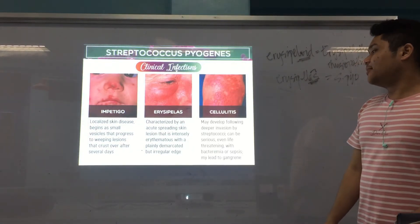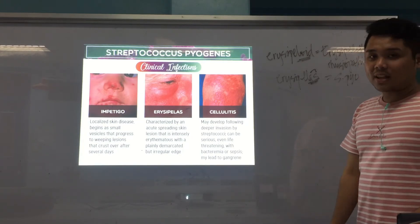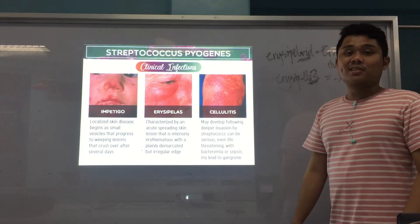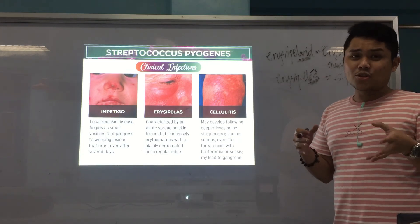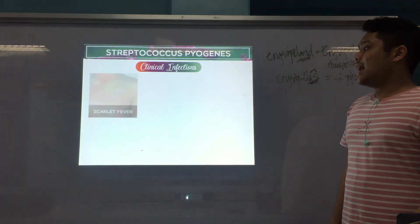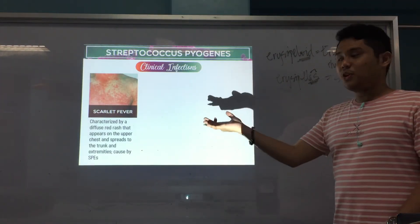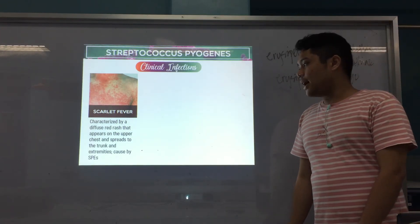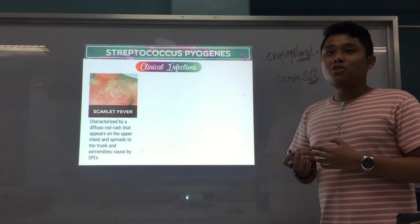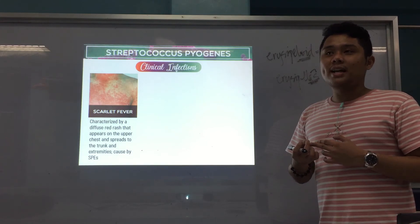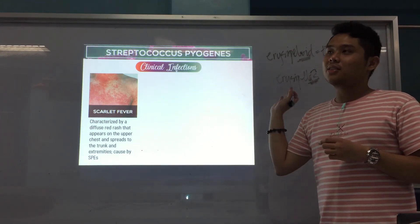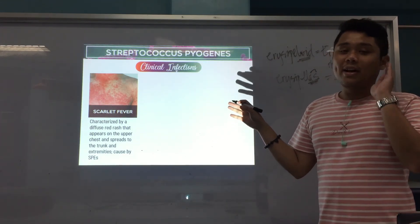Cellulitis is a deeper invasion by Strep pyogenes that can be life-threatening if it reaches the bloodstream, causing bacteremia or sepsis, and may lead to gangrene. Strep infections can be internal, bloodstream-related, or surface/skin infections. Scarlet fever presents with a diffuse red rash spreading to the trunk and extremities, caused by pyrogenic exotoxins (SPEs).